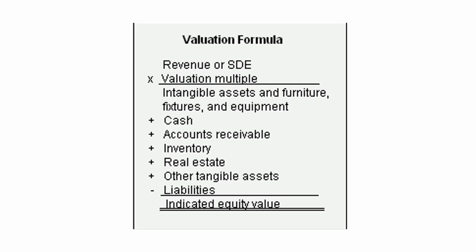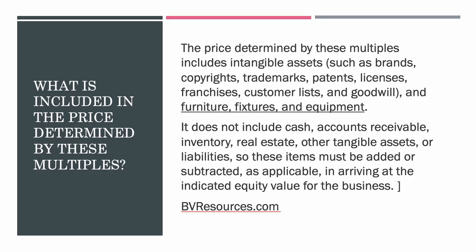What did other businesses that are pretty similar to yours sell for? Remember, no two businesses are exactly alike, and always using the average is not the right answer. Sometimes you'll use higher or lower than the average. Keep in mind that when looking at multiples of gross revenues, they're pulled from businesses that have sold — and all those businesses have things like trademarks, patents, furniture, fixtures, and equipment already included, so you're not adding those separately.